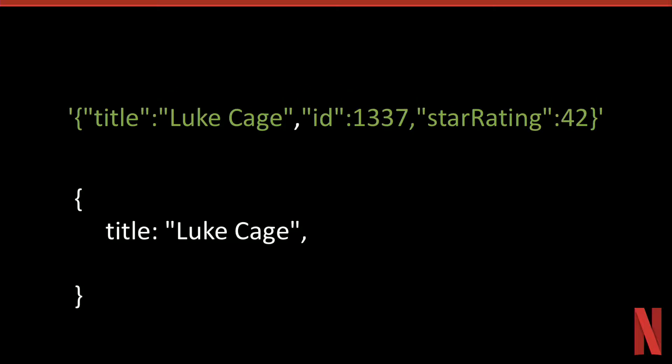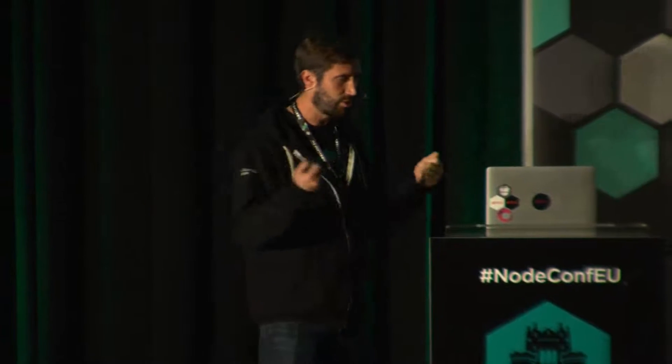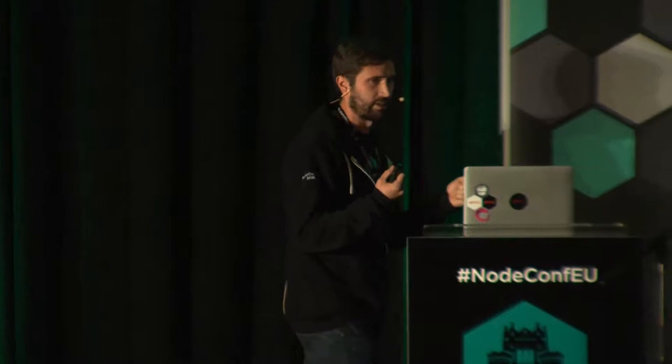It has to do this. If you had a hundred-kilobyte string of JSON, it has to go through every single character. There's no two ways about it — it can't skip any of it, it can't partially serialize or deserialize. It has to go through the whole thing. That means you spend a lot of time doing stuff.